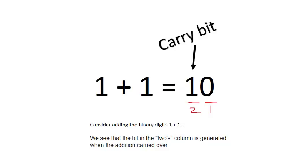So if we consider adding the binary digits 1 plus 1, we see that the bit in the 2's column is generated when the addition is carried over. So because we can't use the decimal number 2, we have to carry over the 1 so that it is in the 2's place.